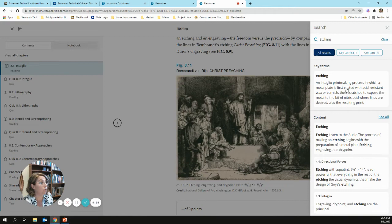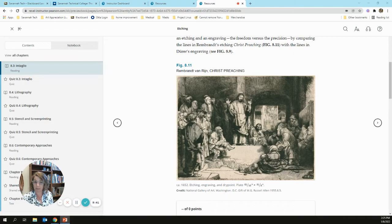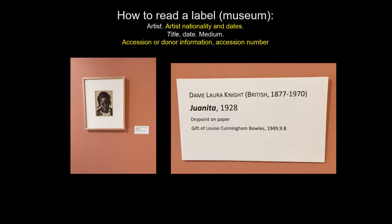This work of art is a print, not a drawing, because dry point is a printmaking process. Back to my presentation — this is a work of art I saw at the Jepson Center here in town. The artist is Dame Laura Knight, the title is Juanita, it was made in 1928, and it's a print made using dry point. Below that is accession information, which is not really relevant to you or to this class.